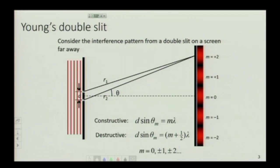And it's telling you that the path length locating the 1st fringe is such that the 2 waves are exactly separate, the distance between the 2 waves is exactly 1 wavelength. For the 2nd order fringe, the distance traveled by the 2 waves is exactly 2 wavelengths.